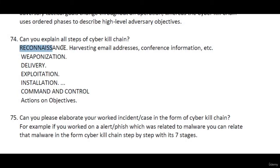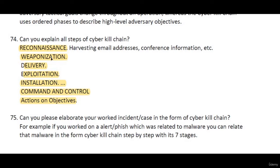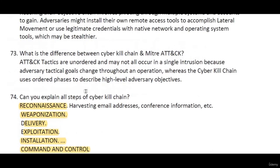For Emotet, as reconnaissance the attacker needs an email ID of a user in the organization. Weaponization is creating the malicious mail. Delivery is sending that mail to the user. Exploitation is the user clicking on the attachment. Installation is the malware installing once clicked. After that it communicates for command and control, and then the action objective — for example, stealing data.